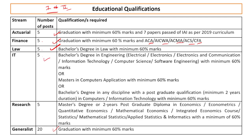For IT: Bachelor's in Engineering with electrical, electronics, electronics and communication, IT, computer science or software engineering with 60% marks; or MCA with 60% marks; or a bachelor's degree in any discipline with a post-graduation qualification of minimum 2 years duration in computers or information technology with 60% marks.